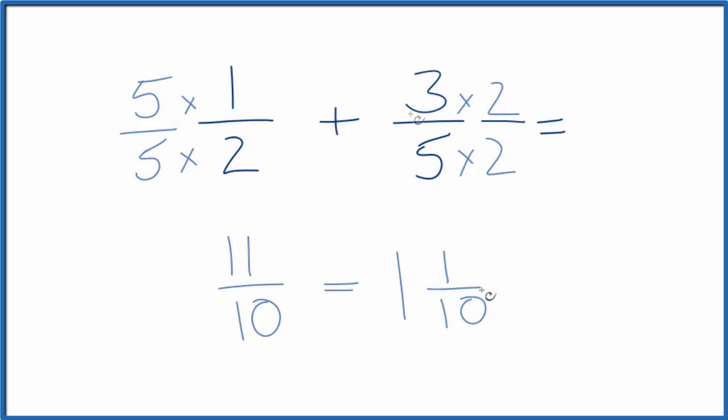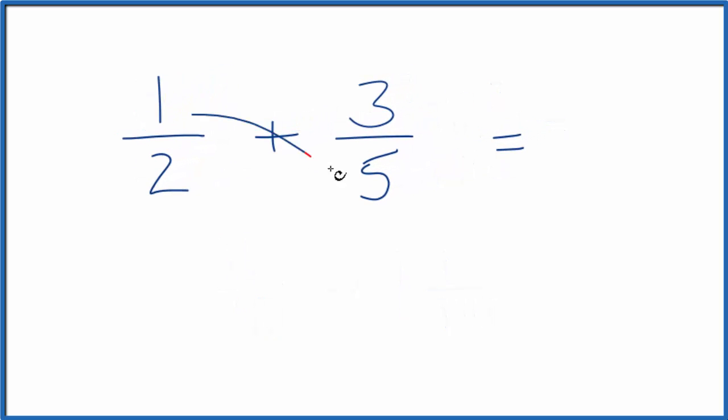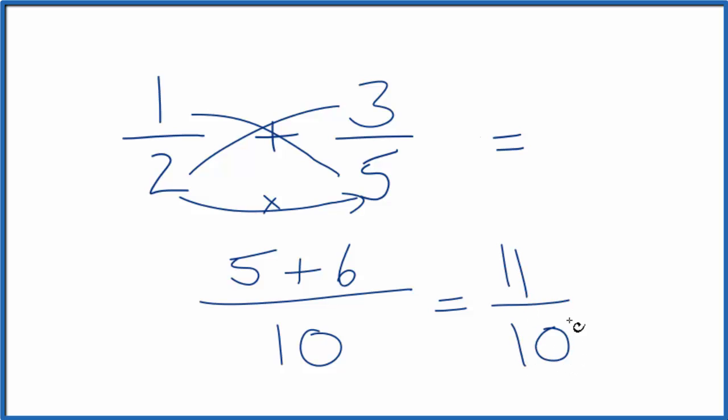Let's quickly check our work. So I can multiply 1 times 5 here, that gives me 5, plus 2 times 3, that gives me 6, that's my numerator. For my denominator, multiply 2 times 5, and that gives me 10, and I end up with 11 tenths again, or you could call it 1 and 1 tenth.